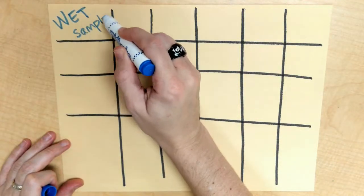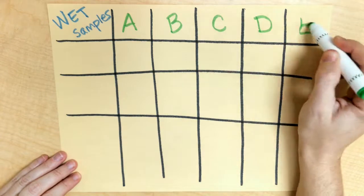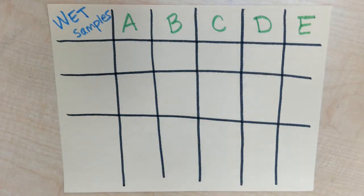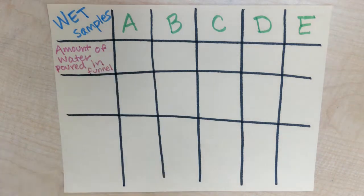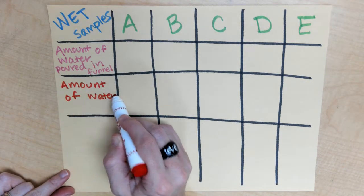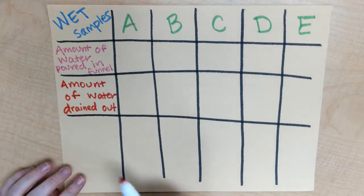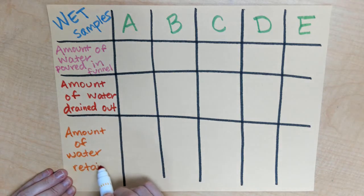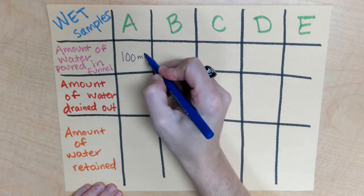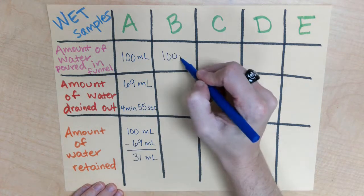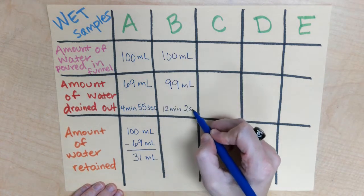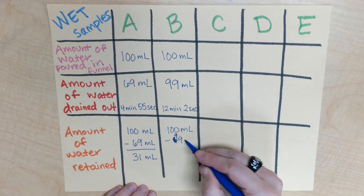Step eleven, you'll need to repeat this same procedure again using that same soil sample. But, this time instead of using dry soil, like when you first placed your soil in the paper funnel, instead you'll be using all of that damp soil. So, you'll be doing the same type of test, but with wet damp soil instead.